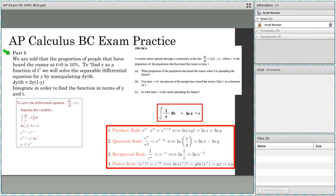Now looking at part B, we're told that the proportion of people that have heard the rumor at t equals 0 is 10%. So to find y as a function of t, which is what we're given, we're going to solve the separable differential equation, and then use the initial condition, t equals 0 is at 10%.